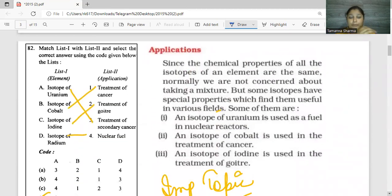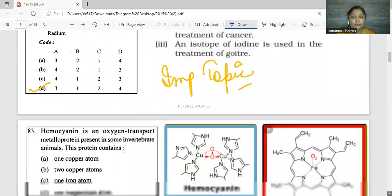Moving forward to the next question. If you have watched our previous videos, almost every one year the question is repeated: what are isotopes and what is the application of those isotopes? You have to match the list - elements, isotopes, and their applications. Uranium is used for nuclear fuel. Cobalt and radium both are used for cancer treatment. Iodine is used for goiter treatment. You have direct questions coming from this chapter. The topic of isotope is very important.